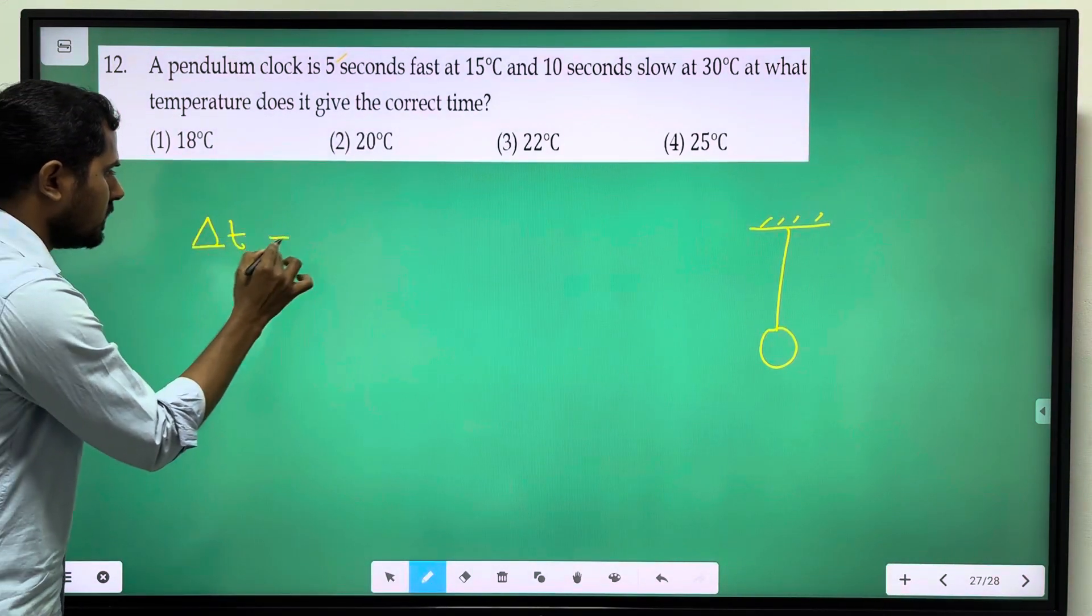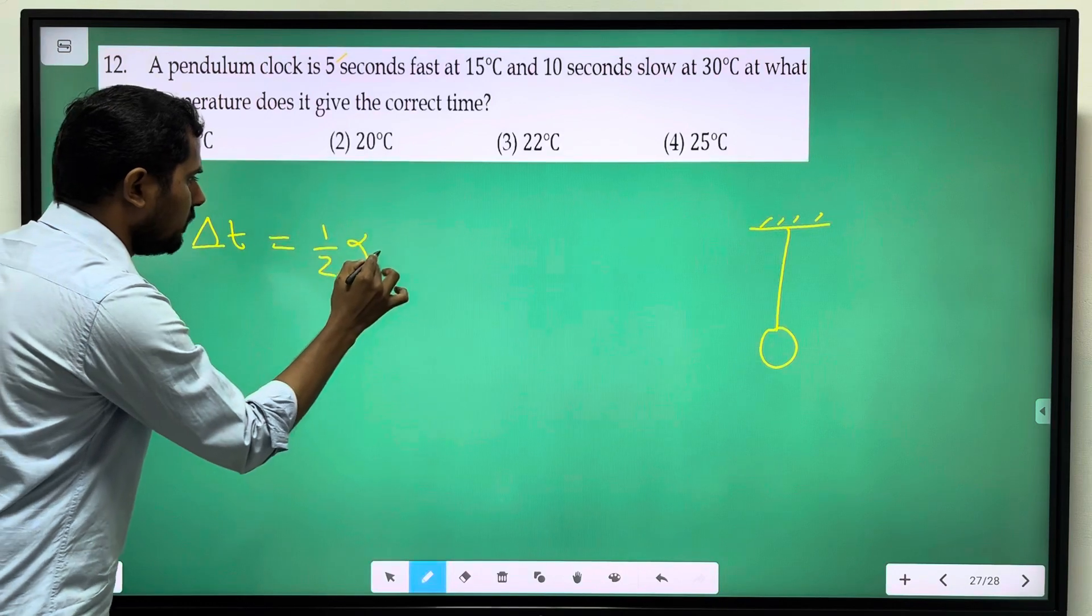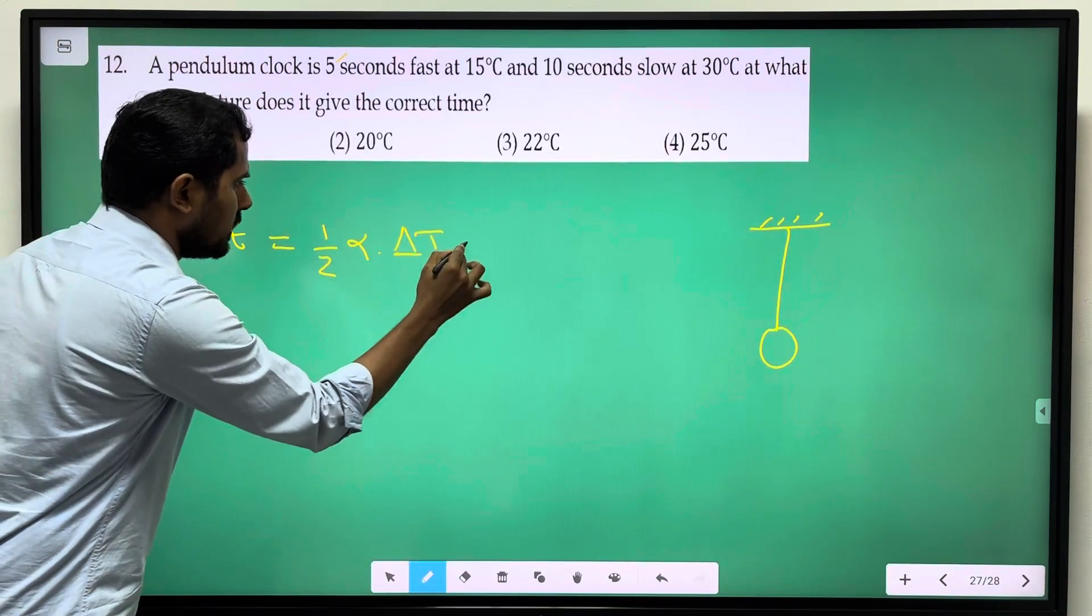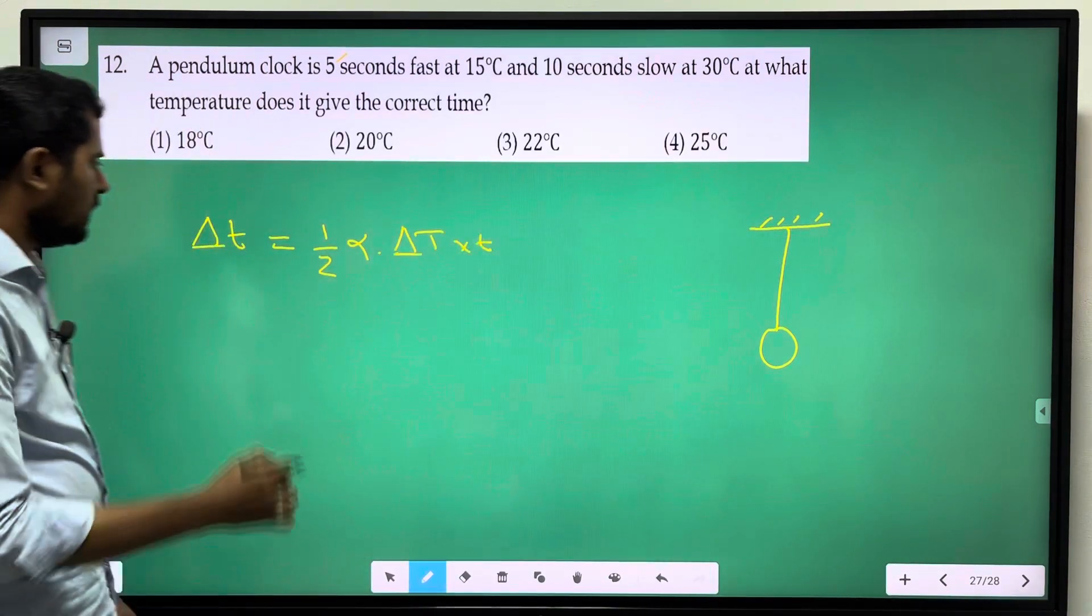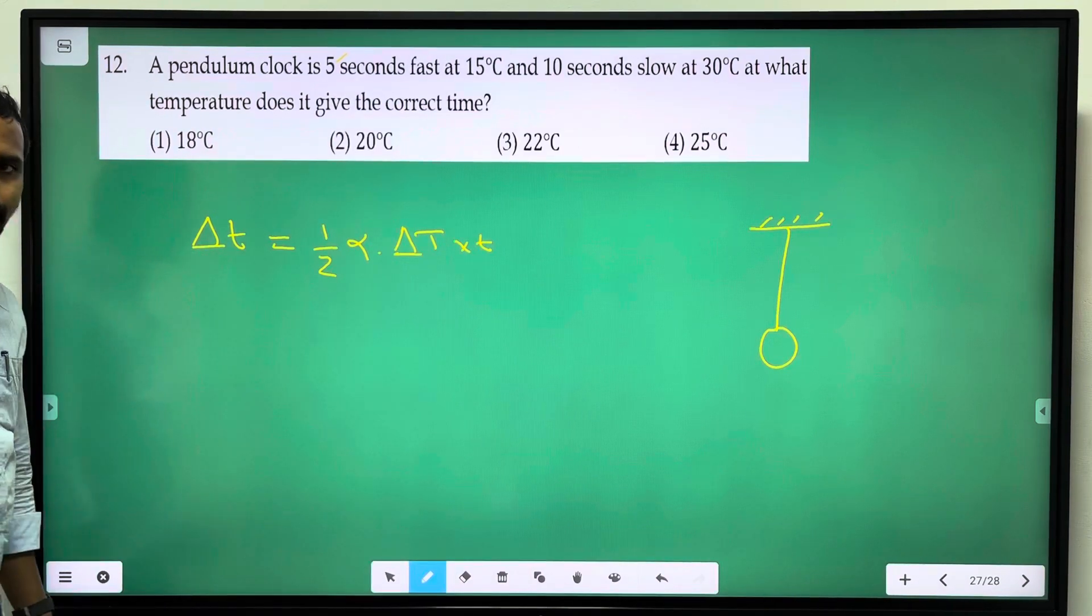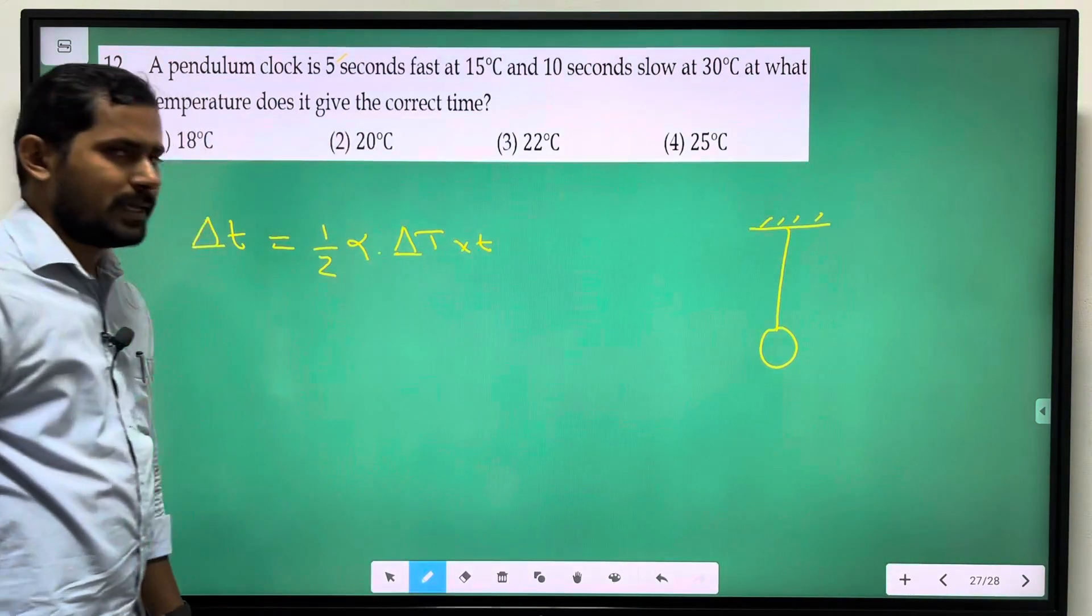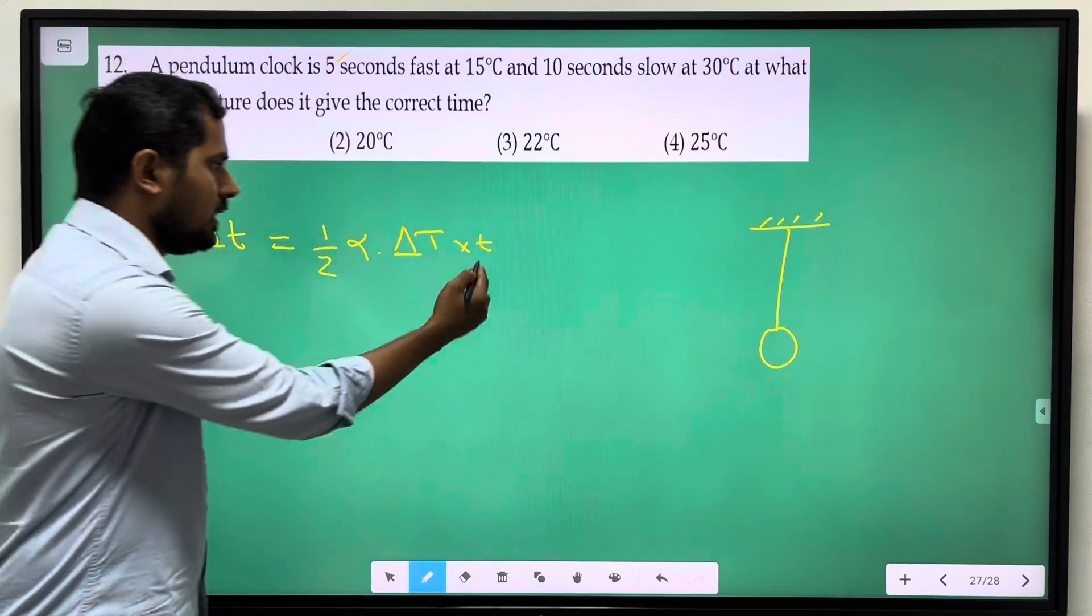Del T is equal to 1 by 2 alpha del T into time. We have small del T, change in time. Capital del T, change in temperature. T, usually we have time to calculate.